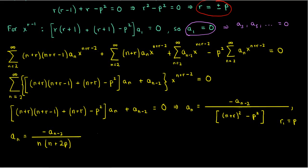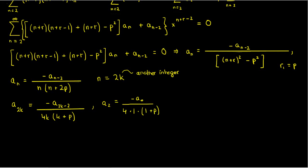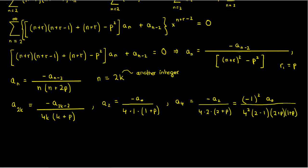Since only even-indexed coefficients are nonzero, we substitute n = 2k. With r = p (the larger root), the recursion becomes a_{2k} = -a_{2k-2} / (4k(k+p)). Evaluating: a₂ = -a₀ / (4·1·(1+p)), and a₄ = (-1)²·a₀ / (4²·2·1·(2+p)(1+p)). The general pattern is a_{2k} = (-1)^k·a₀ / (4^k·k!·(p+k)···(p+1)).